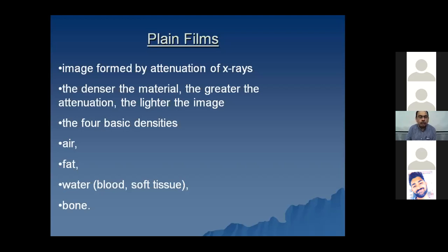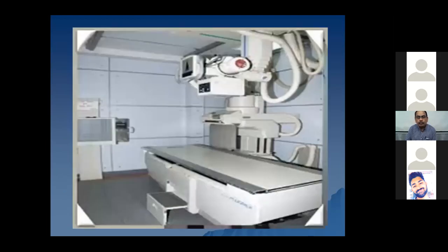I will show you these four densities on a plain film. This is a typical x-ray unit. You can see the x-ray tube, the table on which the patient is placed. This is the stand where the chest x-ray is performed.